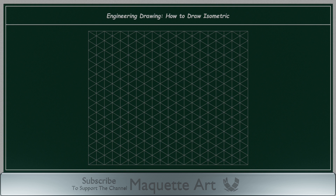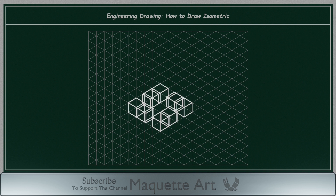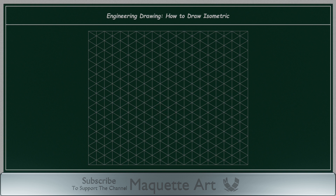As we mentioned before, the 2D grid is made of squares, so this isometric grid must be made of cubes. Can you see the cubes? The entire grid is made of those overlapping cubes. Now let's use this grid to draw a cuboid of dimensions 2 by 5 cm and a height of 1 cm.